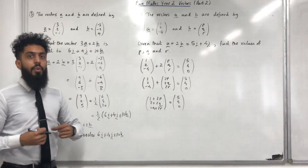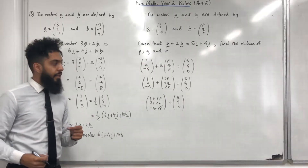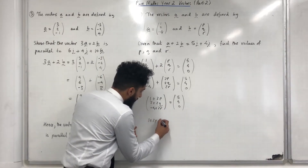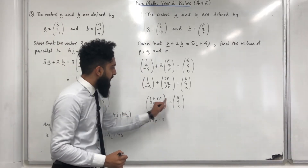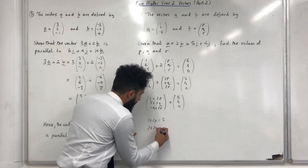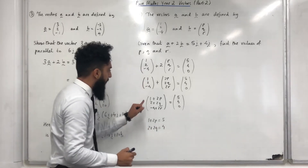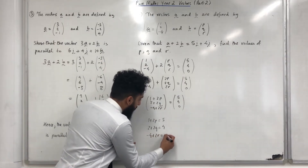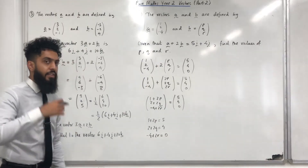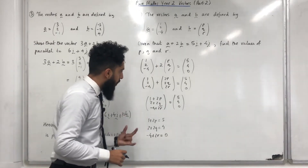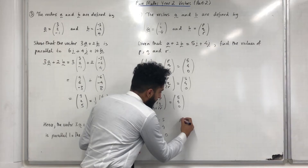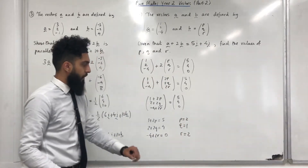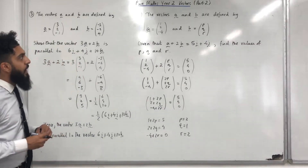Comparing coefficients: for i, 1 plus 2p equals 5; for j, 2 plus 2q equals 4; for k, minus 4 plus 2r equals 0. Solving each equation: p equals 2, q equals 1, and r equals 2. That completes question number 4.